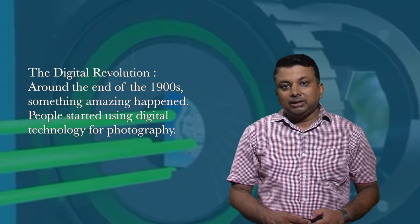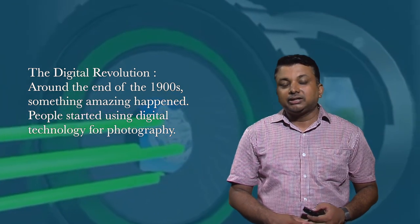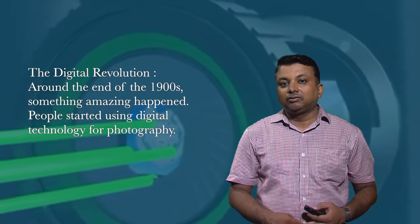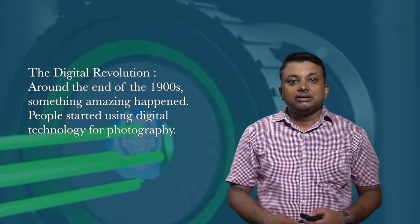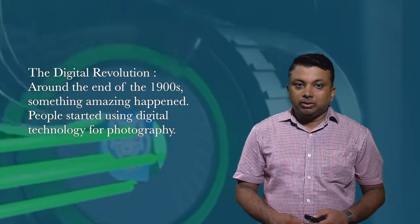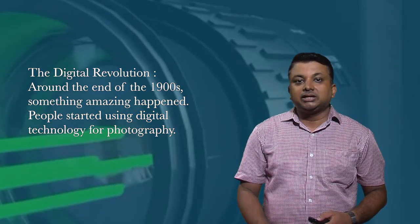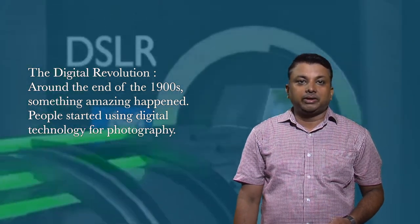Around the end of the 1900s, something amazing happened — people started using digital technology for photography. This changed everything because we could take and share pictures in a whole new way. As we learn about digital cameras, remember all the steps that got us to where we are today with digital photography. It has been a fascinating journey.